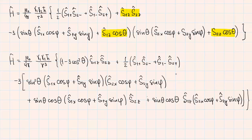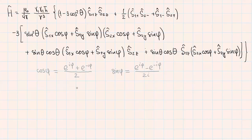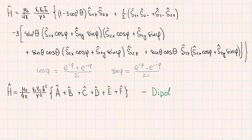This allows me to rearrange the Hamiltonian in the following form. To continue, I will express the cosine phi and sine phi. By inserting the expression for the cosine phi and sine phi into the Hamiltonian, I can present the terms which are in the curly brackets as a sum of six different terms: A, B, C, D, E, F. This form of the spin dipole Hamiltonian is sometimes called dipole alphabet.